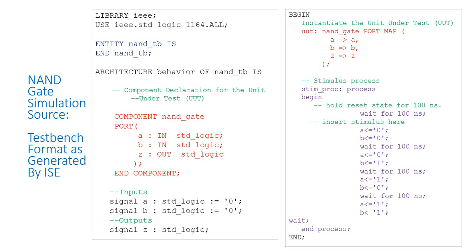We have another process — this is the stimulus representation process. It has a process label and has started. We don't have any sensitivity list here — we will talk about sensitivity lists in another session. You just need to understand how we write the test bench. The process has started with 'begin' and A is zero, B is zero as the first delay condition.